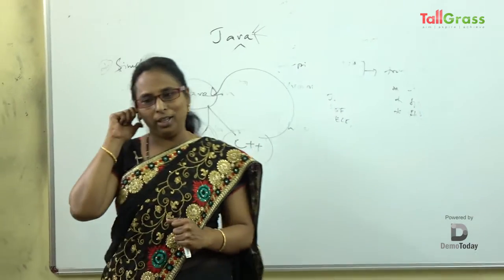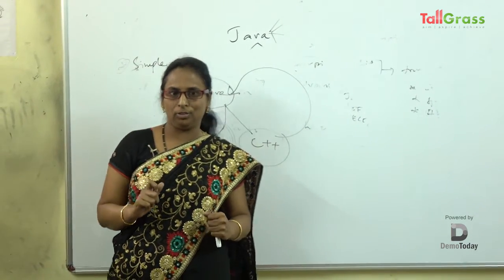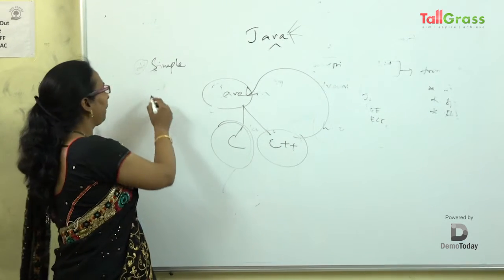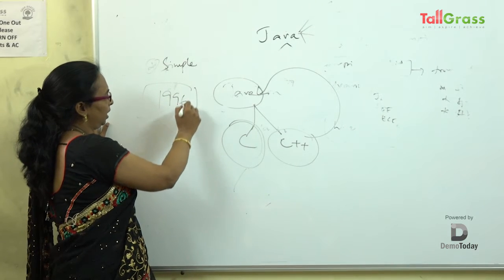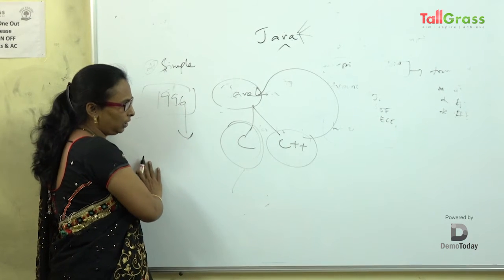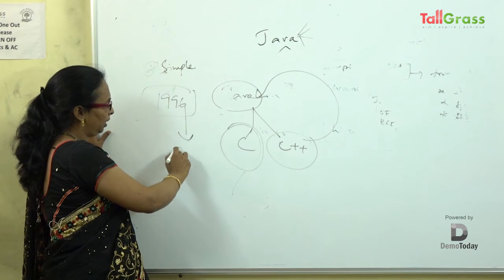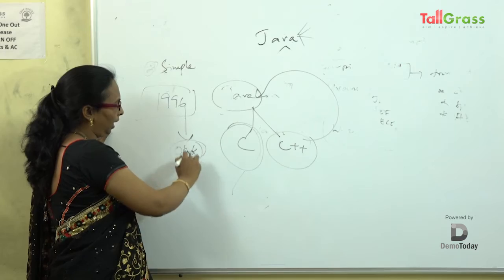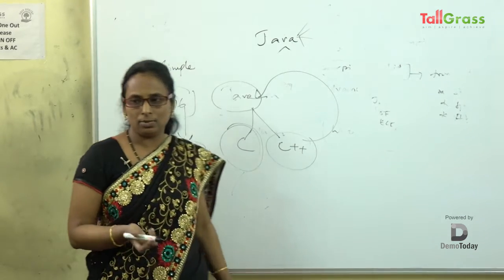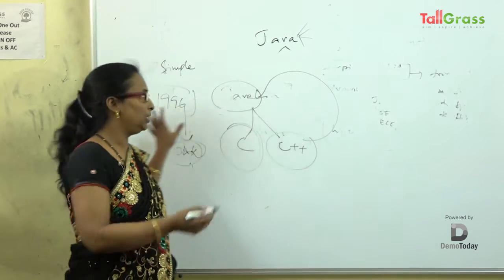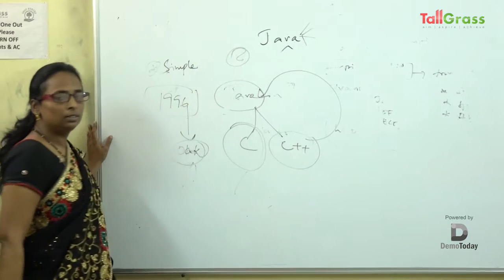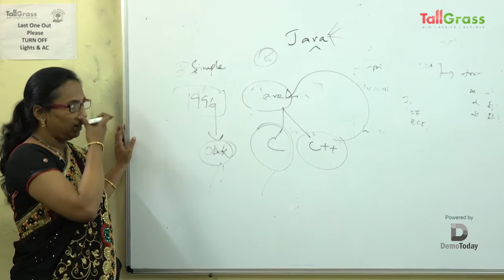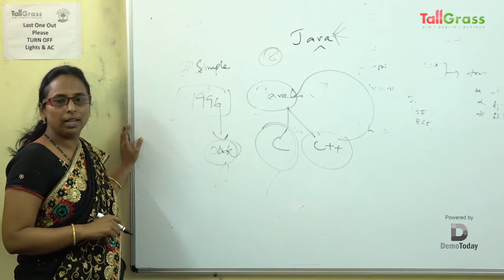In 1996, Java was introduced to the world. When they introduced it, they initially named it Oak. After that they kept enhancing the versions, and the latest version we are learning now is Java 8 — the eighth version.